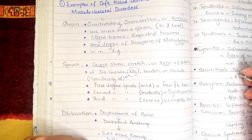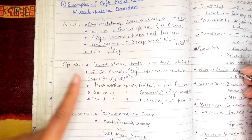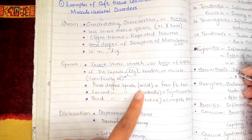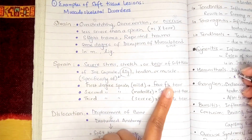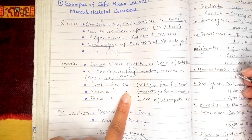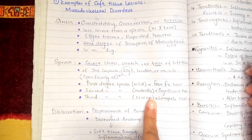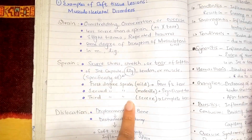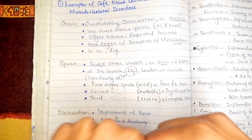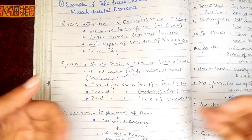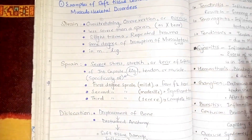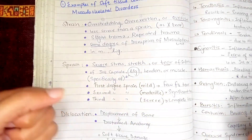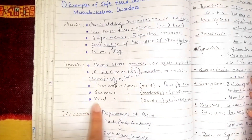There are three degrees of sprain. The first degree is mild, in which only a few fibers have torn. The second degree is moderate, in which there is significant tearing of fibers. The third degree is severe, in which the ligament, tendon, muscle, or joint capsule is completely torn. Any of these soft tissues can be completely torn off in the third degree.